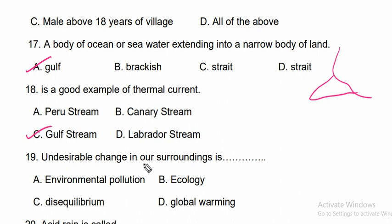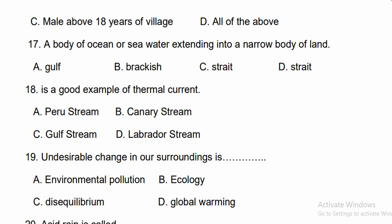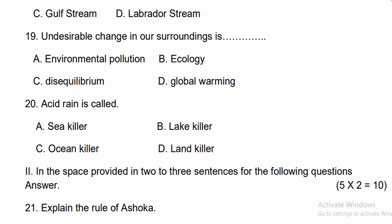Question nineteen: An undesirable change in our surroundings causes environmental pollution. Option A is the correct answer. Question twenty: Acid rain is also called the lake killer — not sea killer, ocean killer, or land killer.